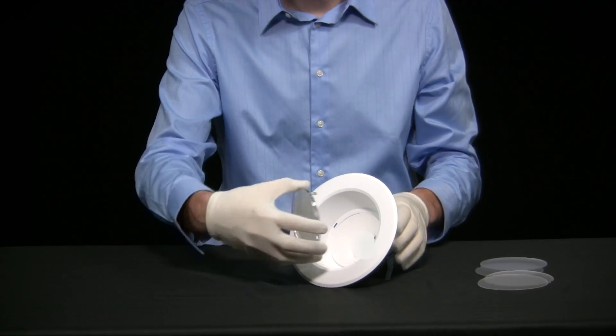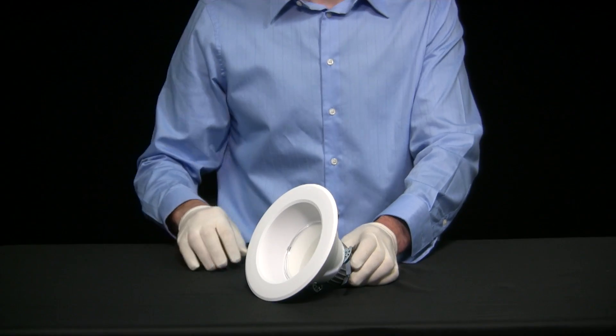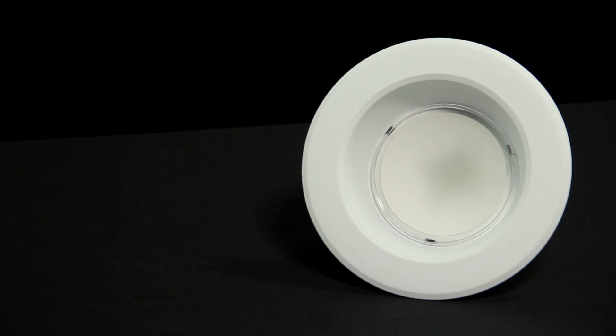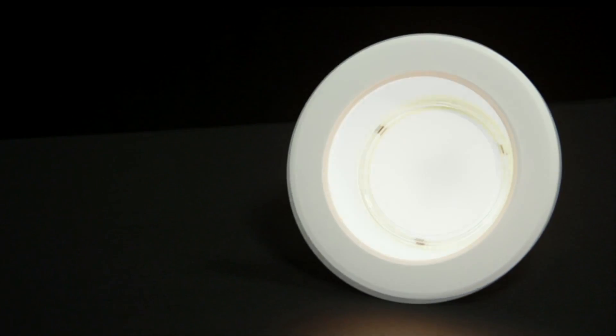Once the diffuser is properly aligned just pop the lens into place. Now you have an attractive can light that is highly efficient and has extraordinary LED hiding.